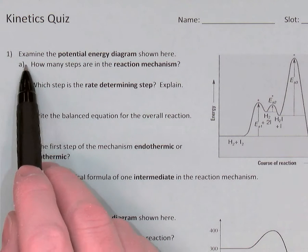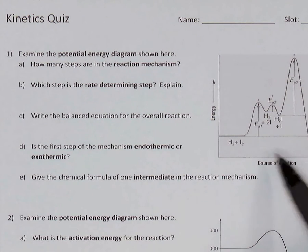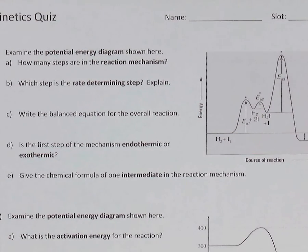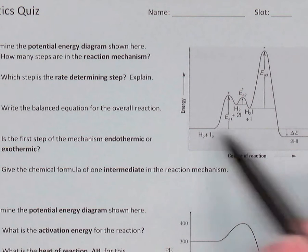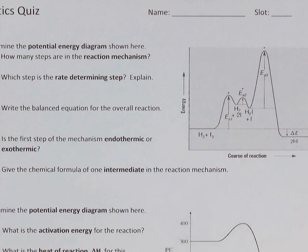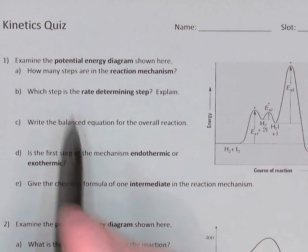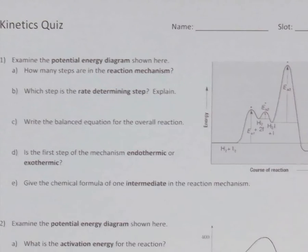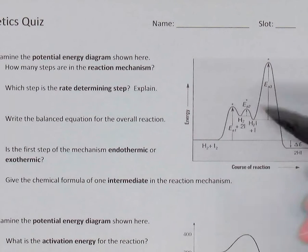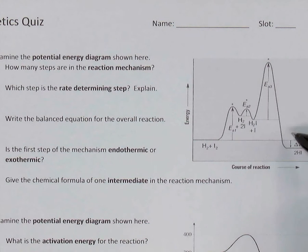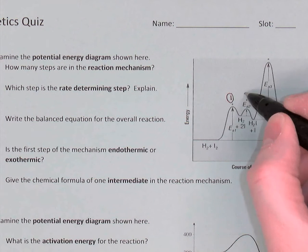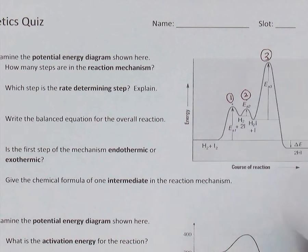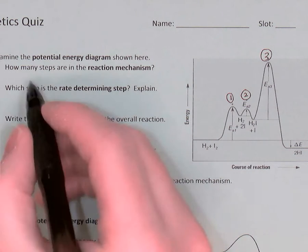Question one: given a potential energy diagram — you can see it here — showing reactants and products and several hills in the middle, we're asked how many steps are in this reaction mechanism. Each step is represented as one hill in the diagram. This first hill is step one, this is step two, and this is step three. So there are three steps in the mechanism.